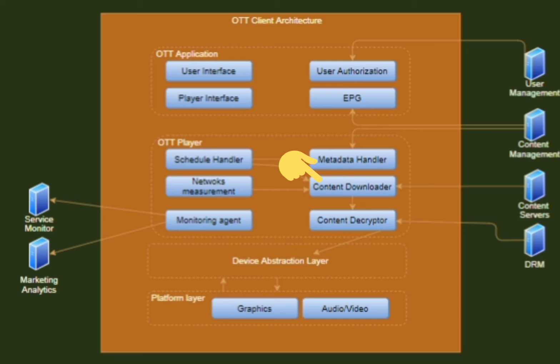The content downloader is the most critical part of the player — it determines video playback quality and hence the user experience. Its goal is to download the best possible bitrate video without stalling. If the algorithms are too optimistic, the video may stall due to lack of buffered content. If the algorithms are too pessimistic, a low bitrate video will be played, spoiling the user experience. Fine-tuning the content downloader is the most challenging part of building the player.